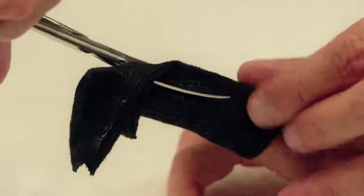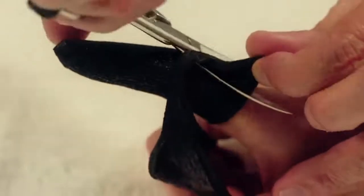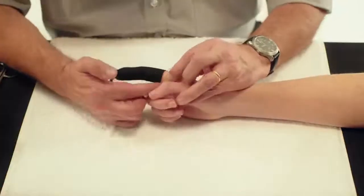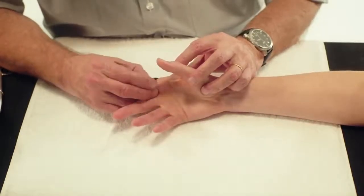As close to the skin as possible, roll the edge of the orthosis on the palmer side upwards to smoothen the edge.